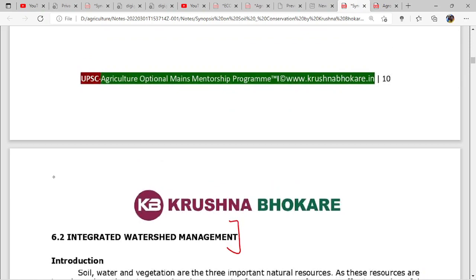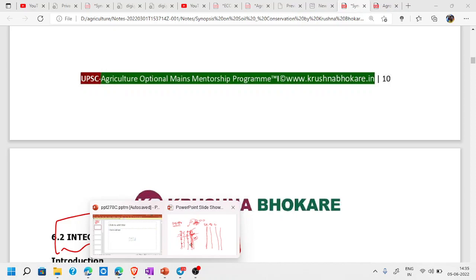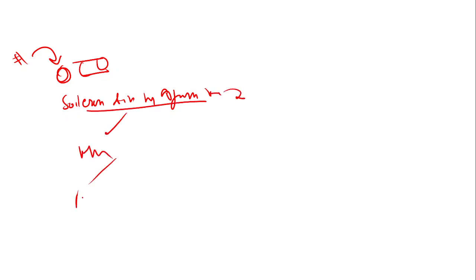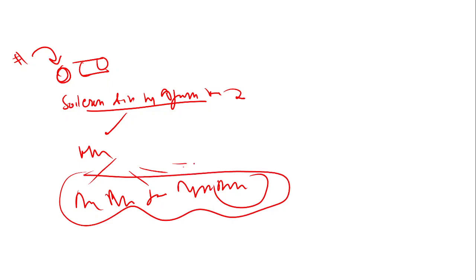Integrated watershed management will be done in the next class. In this lecture, you have covered soil erosion, its types, and factors affecting it. You have understood how to manage it through agronomical, mechanical, forestry, and agrostological methods. You have to understand all this and write some short notes. Thank you, meet you in the next lecture.